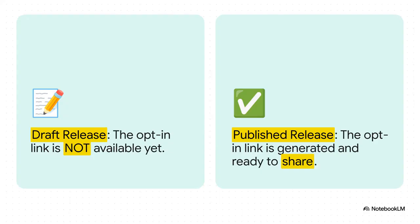Now, listen up because this is a crucial little detail that trips up a lot of developers. That special shareable opt-in link that your testers need only appears after you publish the release. If your release is still sitting in draft mode, you won't see it. So remember the rule: publish first, then share.